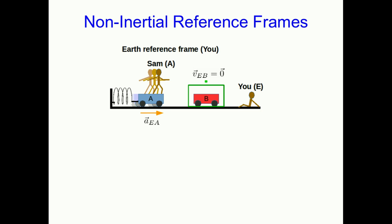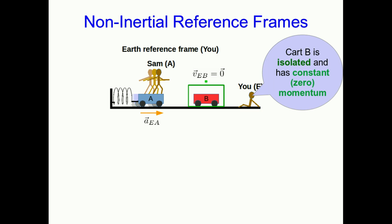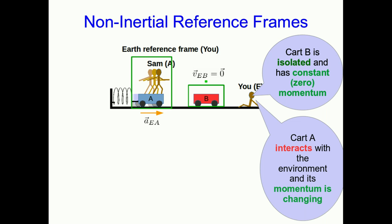What if we have a reference frame that isn't inertial — a non-inertial reference frame, that is, a frame accelerating relative to the Earth? Here's an example: you are in the Earth frame, and Sam is on cart A, which is accelerating because it's being pushed by a great big spring. From your perspective, cart B — a low-friction cart sitting stationary on a surface — is isolated and not interacting, so unsurprisingly it has constant, in this case zero, momentum. The law of inertia at work. You can also see that Sam and cart A are clearly interacting with the environment because of that spring, and they're accelerating, so their momentum is changing.